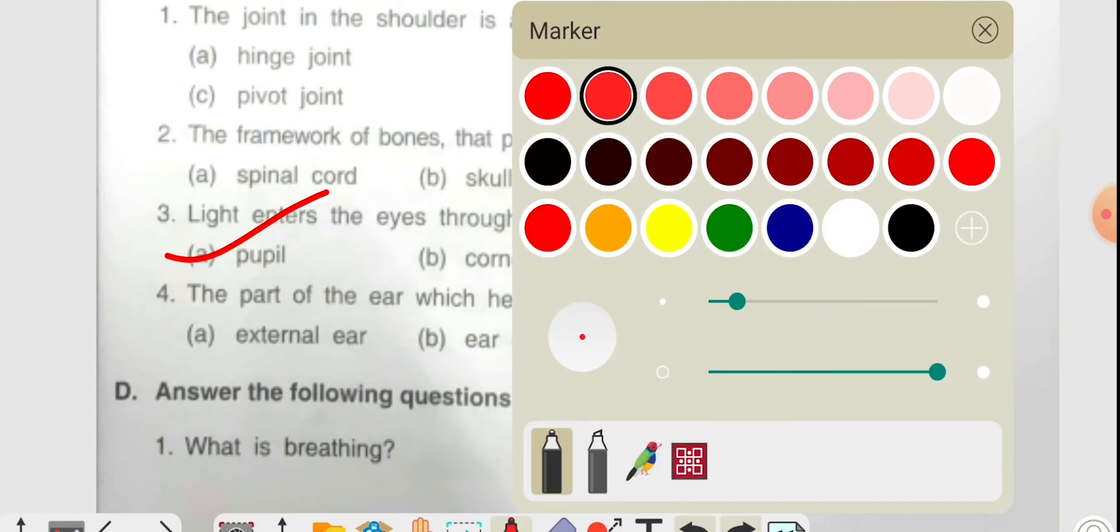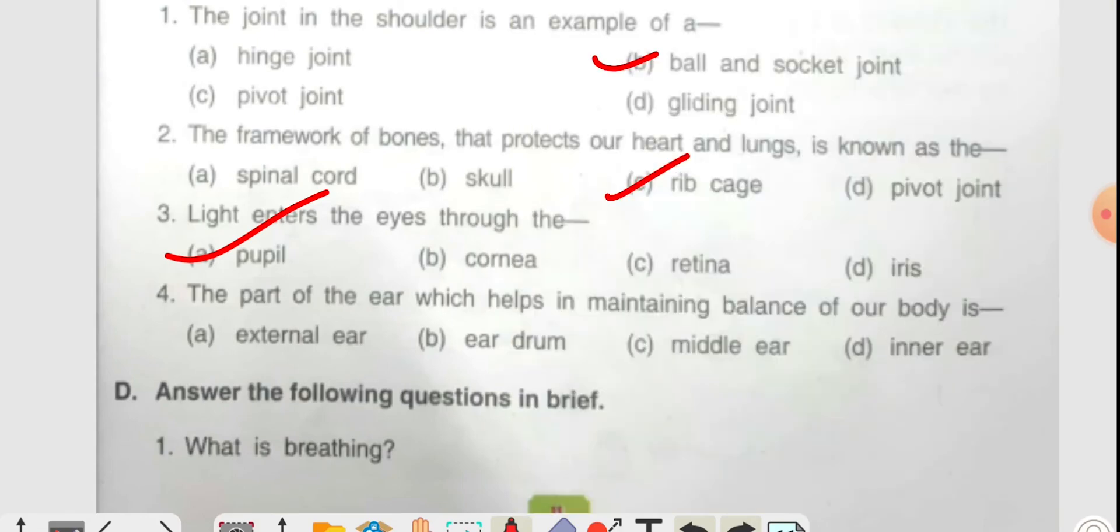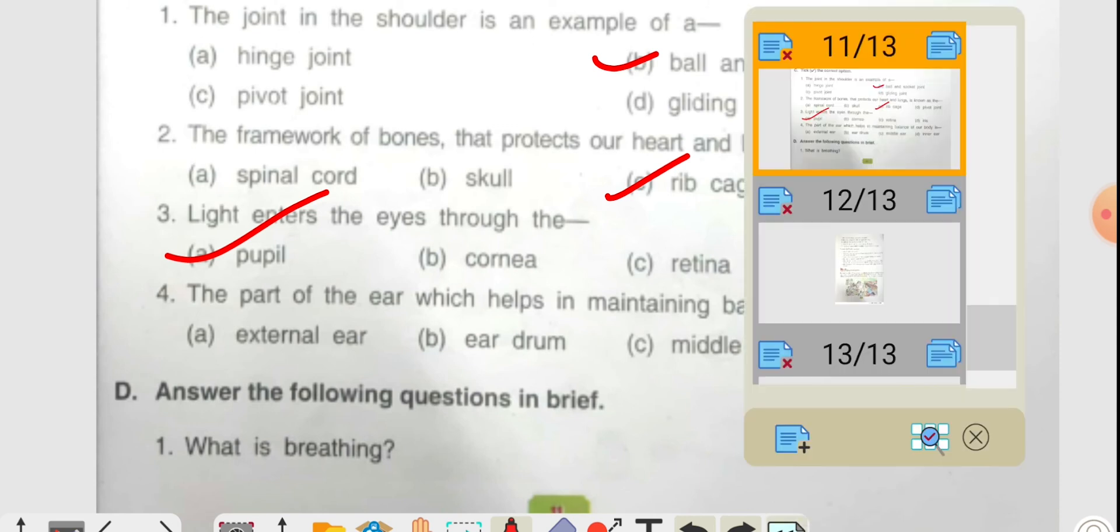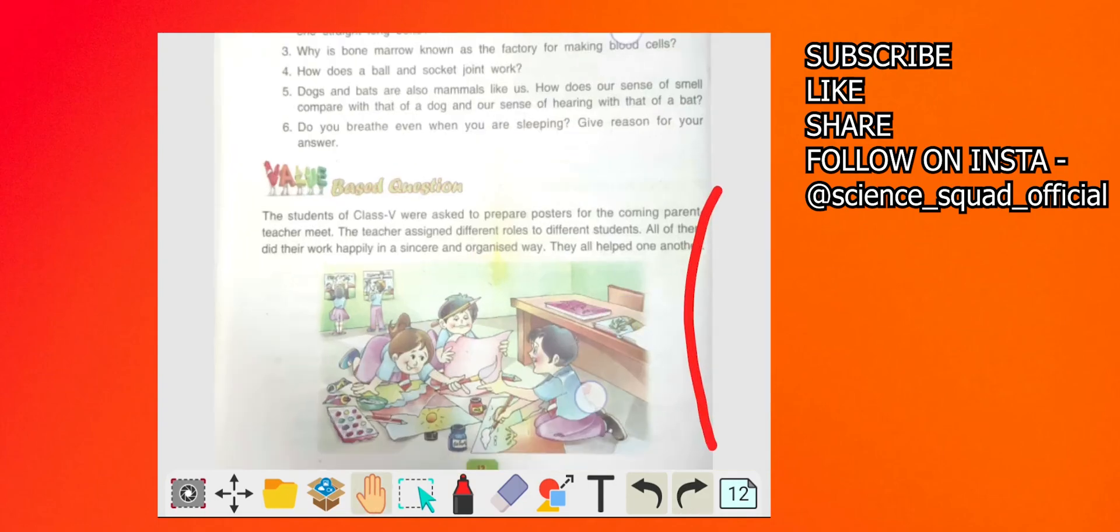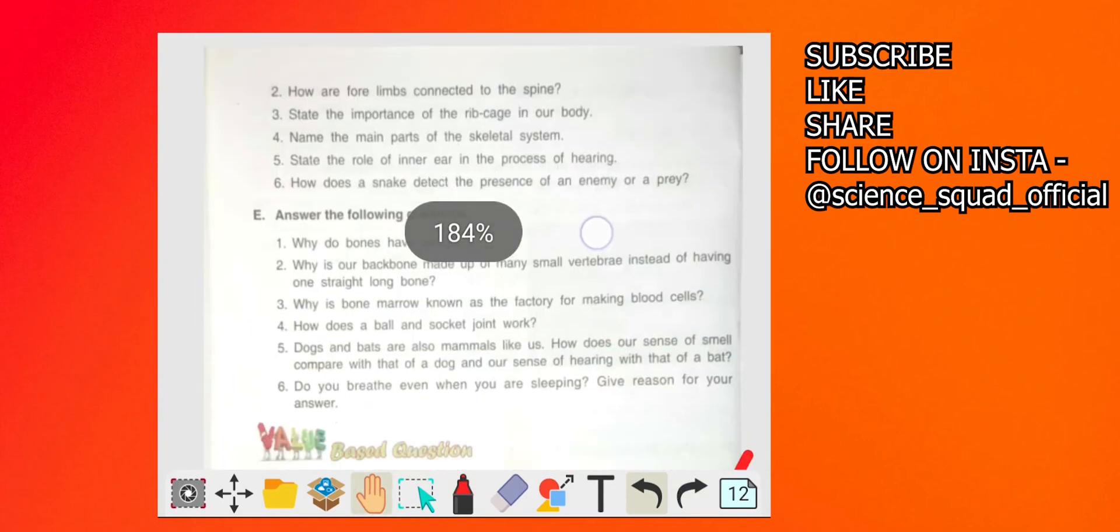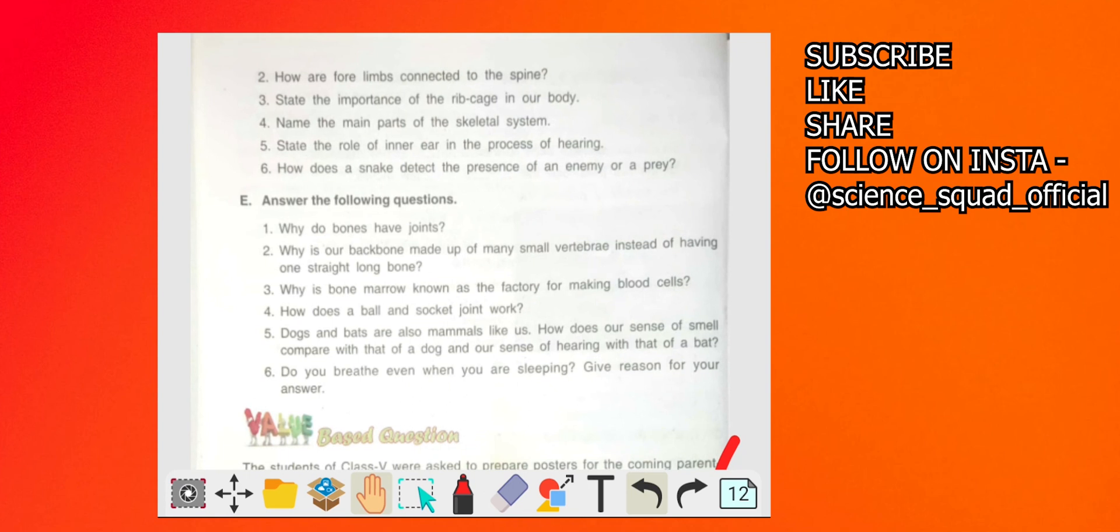Question answers: what is the breathing? Breathing is the process of inhaling oxygen and exhaling carbon dioxide. Let's move to the next question: how are four limbs connected to the spine? Four limbs are connected to the spine with the help of shoulder girder and collar bones.